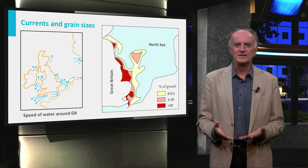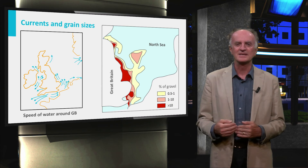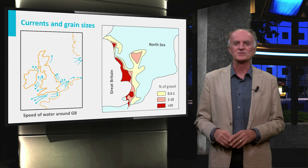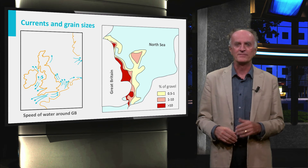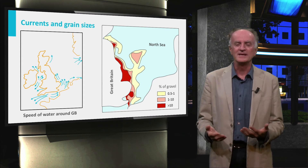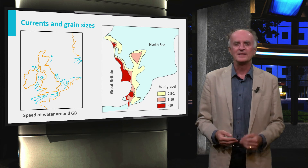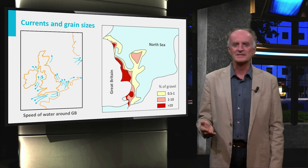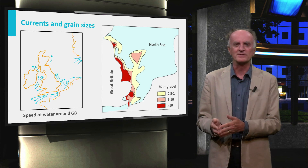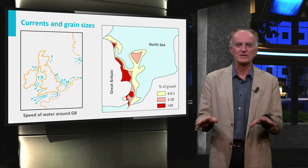The map on the right shows the percentage of coarse-grained sediments — gravels in this case — found on the seafloor. There are a few important observations to gather from the map. First, there is quite some gravel on the seafloor; as we have seen, it was deposited during glacial times. Secondly, these bodies of coarse-grained sediments are not directly related to the position of present-day rivers, and are rather controlled by the speed of the currents moving on the shelf.